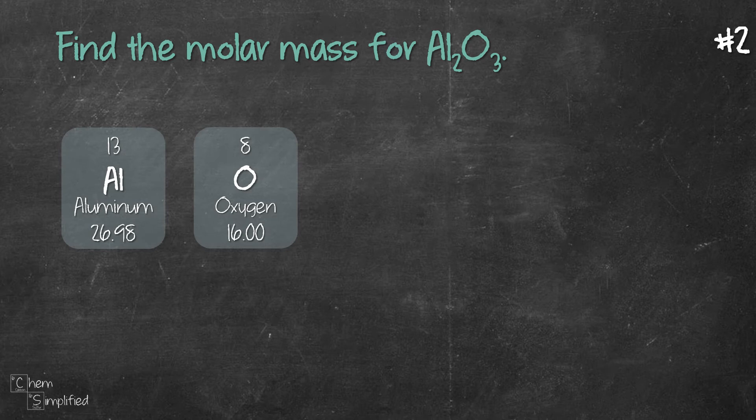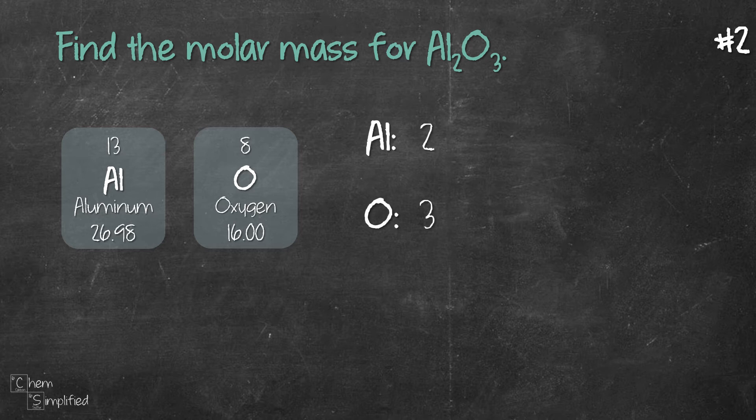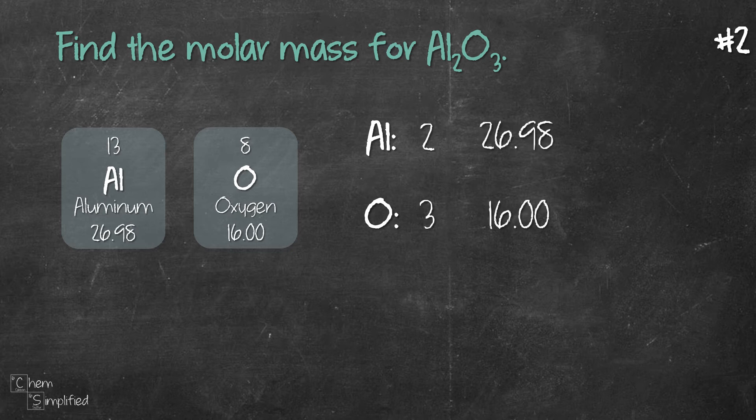Looking at the formula Al2O3, we have 2 Al and 3 oxygen. The atomic mass for Al is 26.98 and 16.00 for oxygen. We'll need to multiply the number of atoms with its atomic mass.